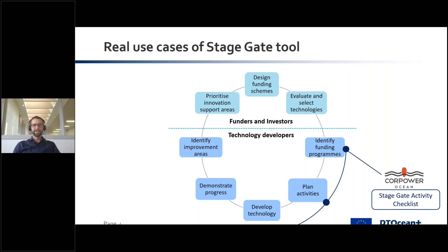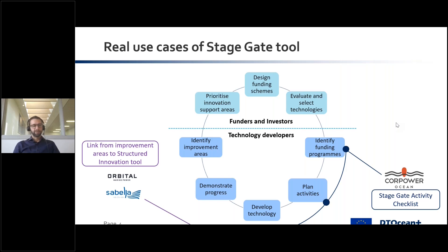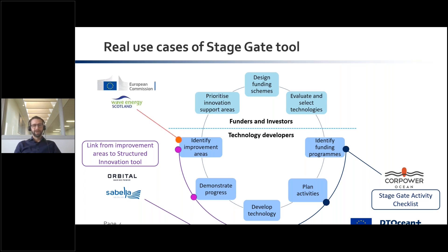They can continue to receive guidance as they go through the technology development process, through different stages of their own development and through different funding schemes in different countries. All the way through, they're receiving guidance and using the self-assessment capability of the stage gate tool. Then you'd move on to a company like Orbital Marine or Sabella — both developing tidal energy solutions, both having been through a few iterations of their technology as they progress to larger scale and higher technological maturity. They use the stage gate tool and the technology passport idea to demonstrate progress to future investors, and can use the tool at any stage to identify improvement areas.